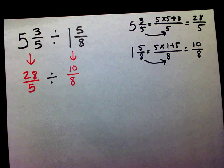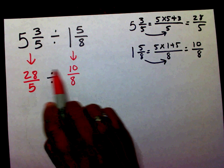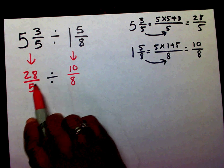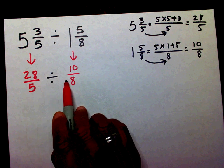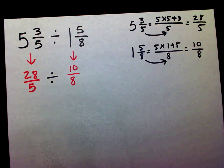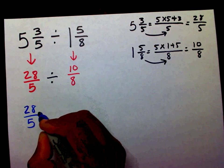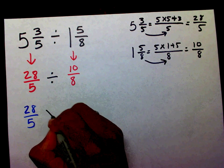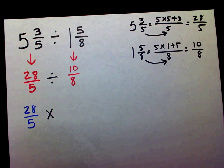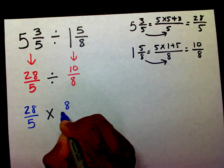Now that I have both of these improper fractions, I'm going to change my division problem into a multiplication problem. I'm going to write twenty-eight-fifths times the reciprocal of ten-eighths, which is eight over ten.